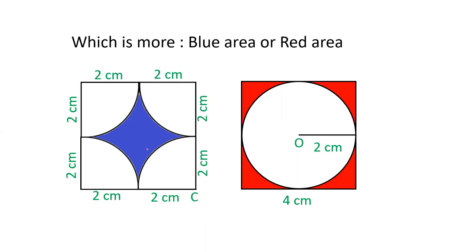And there are four arcs drawn at the corner taking radius of 2 cm. And there is a circle drawn inside the square touching all the sides and its radius is 2 cm. And we have to tell which one is more, blue area or red area.